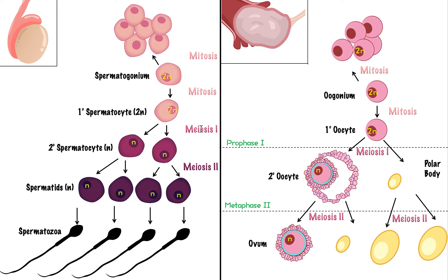Both also involve meiosis. And both involve differentiation — the process of turning a non-specific stem cell into a specific cell type. A stem cell is like a baby with the potential to become many things; these stem cells differentiate into a specific gamete. So both processes involve mitosis, meiosis, and the process of differentiation.